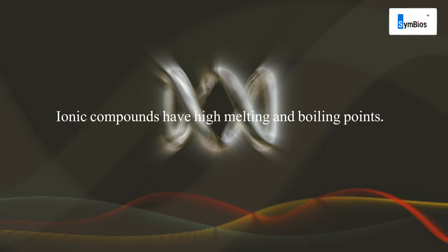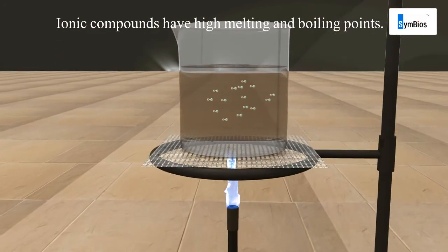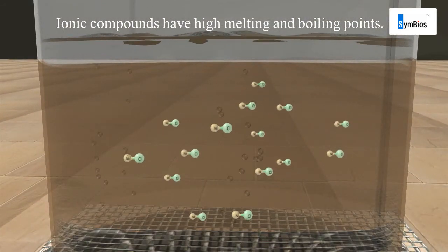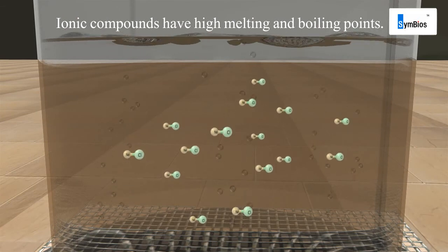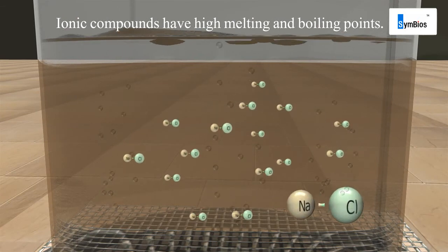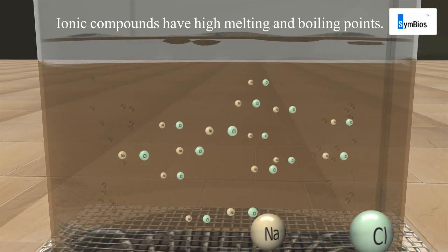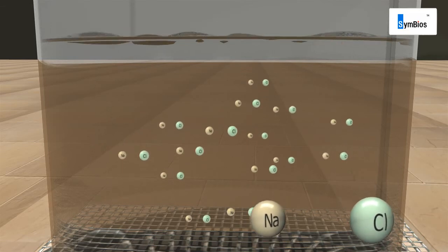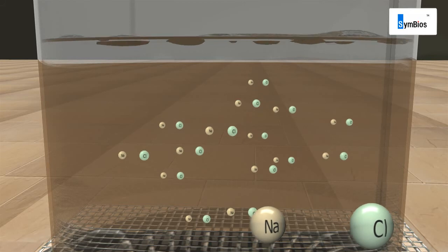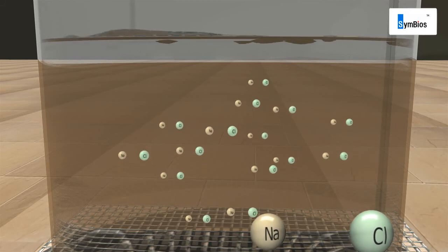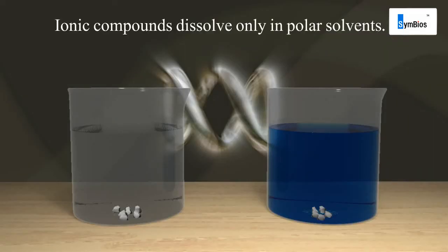The huge amount of energy required to break these electrostatic forces leads to higher melting and boiling point in ionic compounds. This proves the property that ionic compounds have high melting and boiling points.